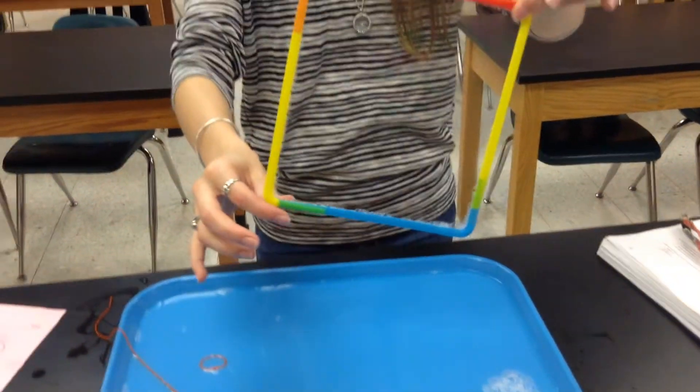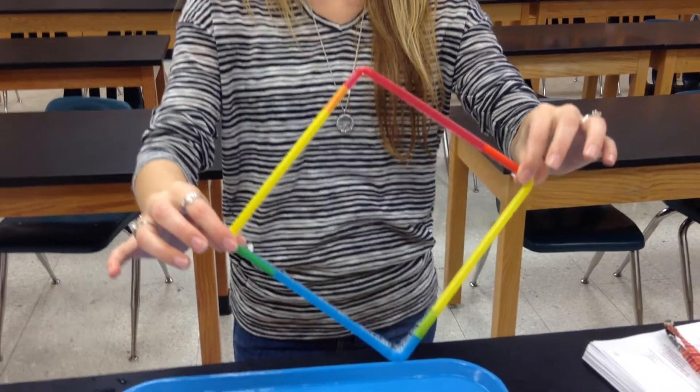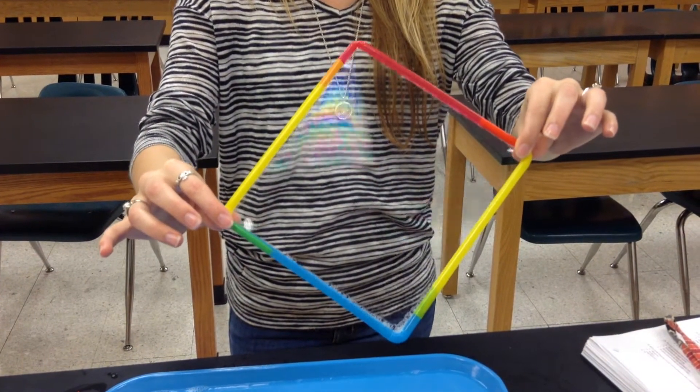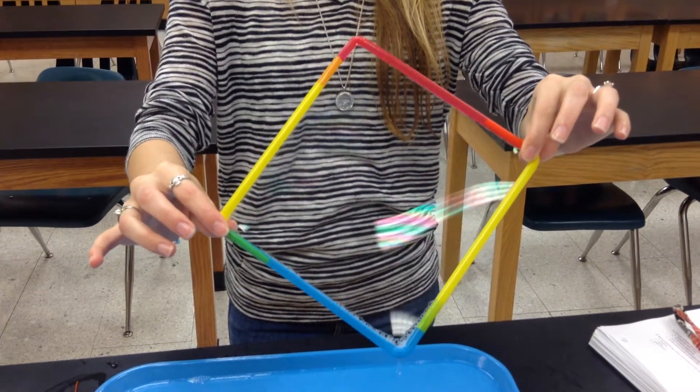So this film inside the straw is the cell membrane, and if you can see it move, that's supposed to demonstrate that it's fluid and flexible.